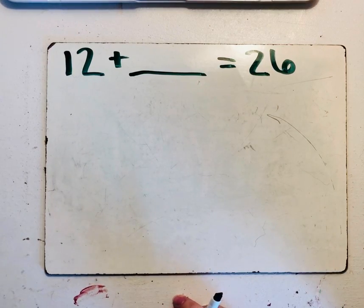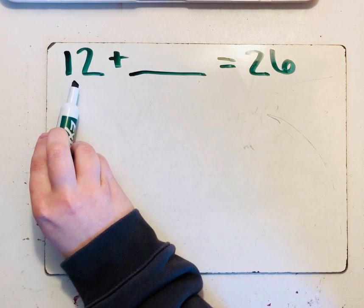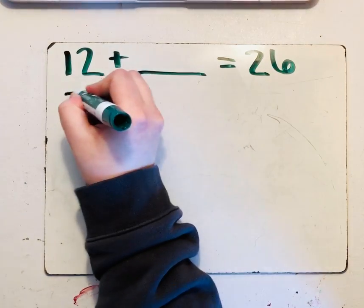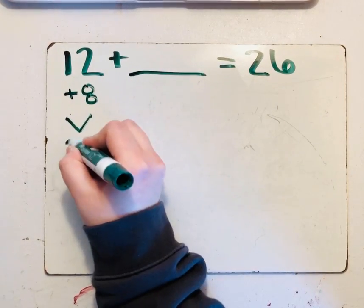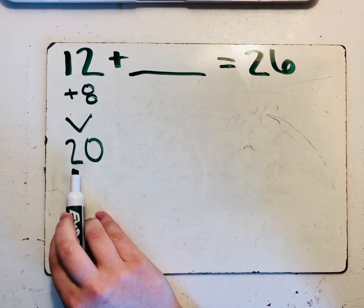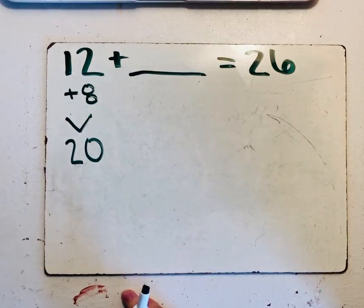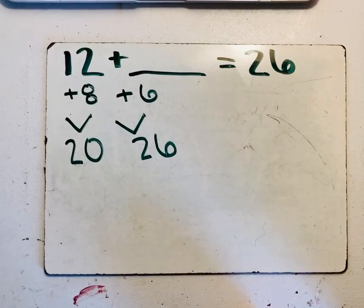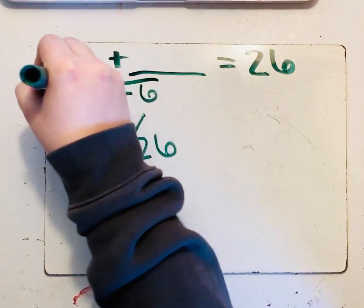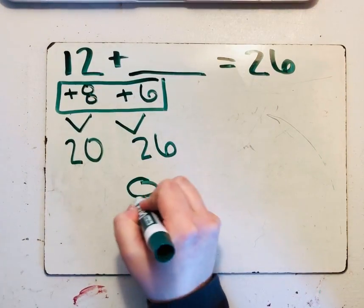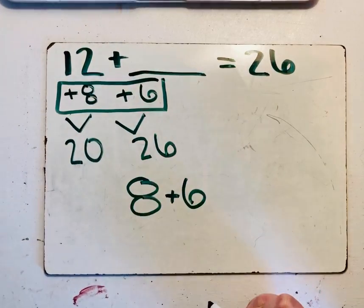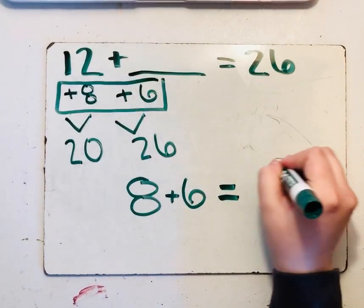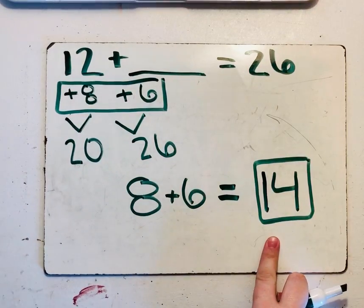So remember, we want to get to a friendly number. So what is our closest friendly number to 12? 20. So what can we add to 12 to get to 20? I'm gonna add 8. What can we add to 20 to get to 26? Good. We can add 6 to get to 26. Are we done yet? Nope. We have to add these two together. So we have 8 plus 6. And we know that 8 plus 6 equals 14. And this is our answer for the easy daily word problem.